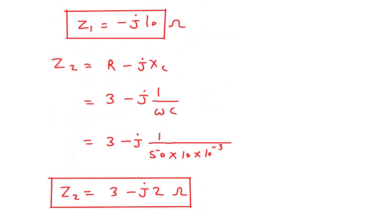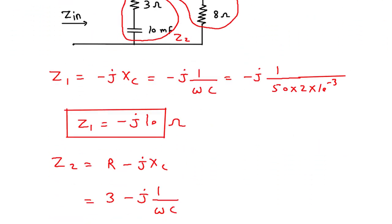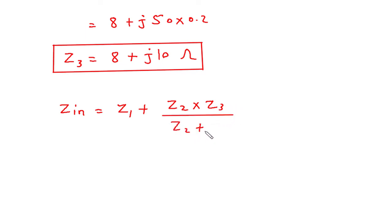Now we have the values of Z1, Z2, and Z3. We can see that Zin = Z1 plus Z2 parallel with Z3. Since Z2 and Z3 are in parallel, Zin = Z1 + (Z2·Z3)/(Z2 + Z3), same as for resistors.